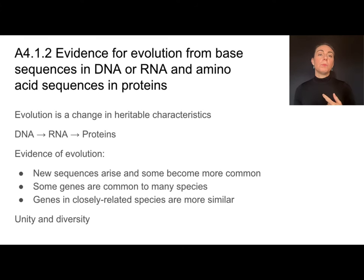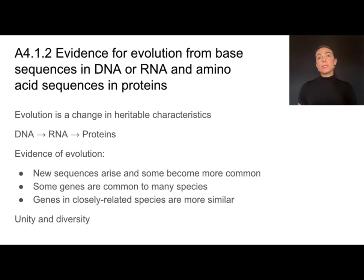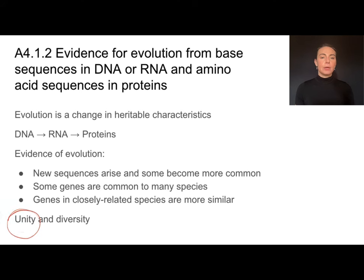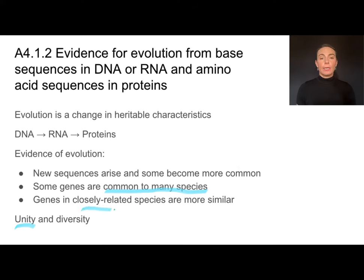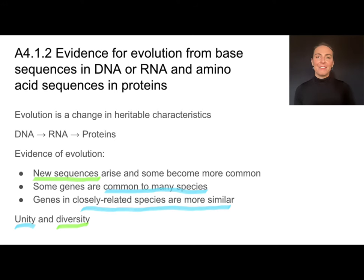Some genes are common to many species, which tells us these species probably came from a common ancestor. And genes in closely related species are more similar than those in more distantly related species. This is a great example of both unity and diversity — unity in that some genes are common to many species, and diversity in that we would expect new sequences to arise and become more common depending on environmental pressures.